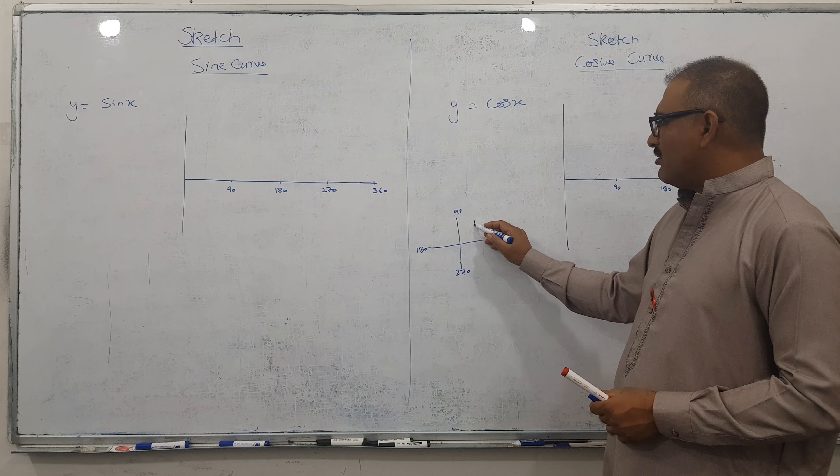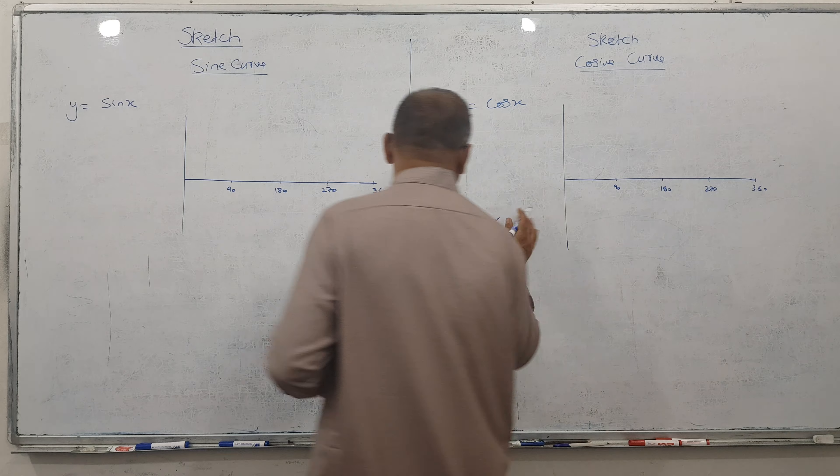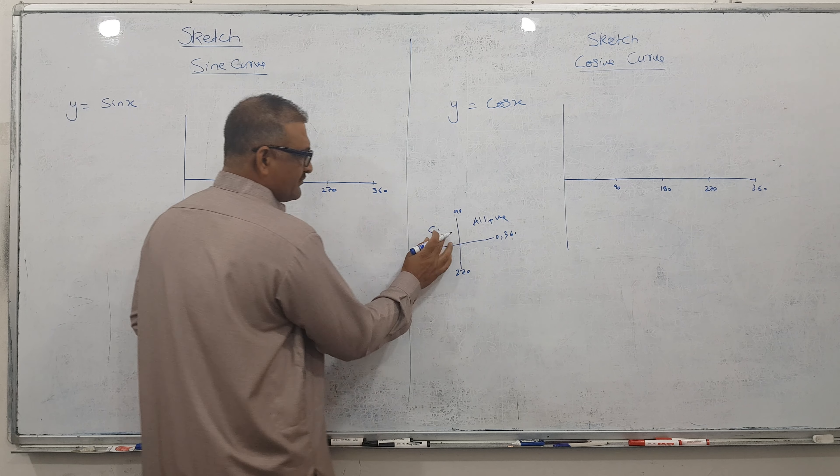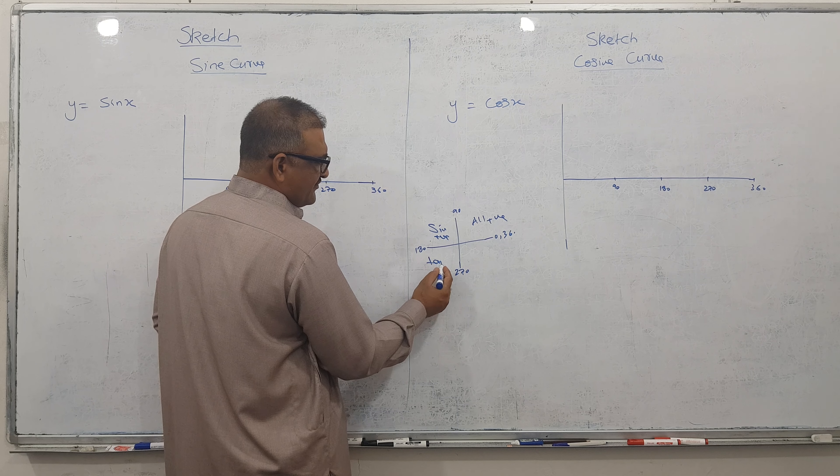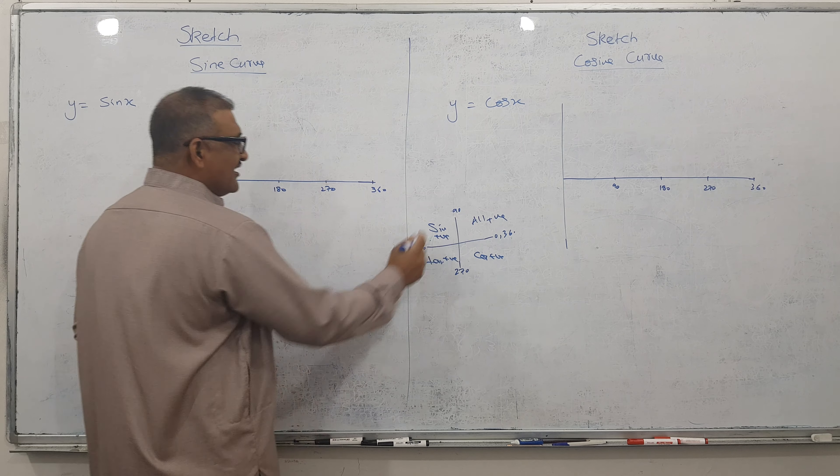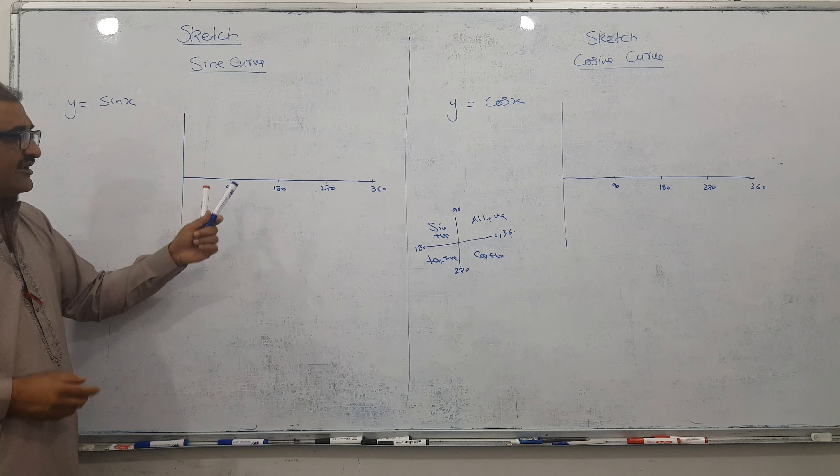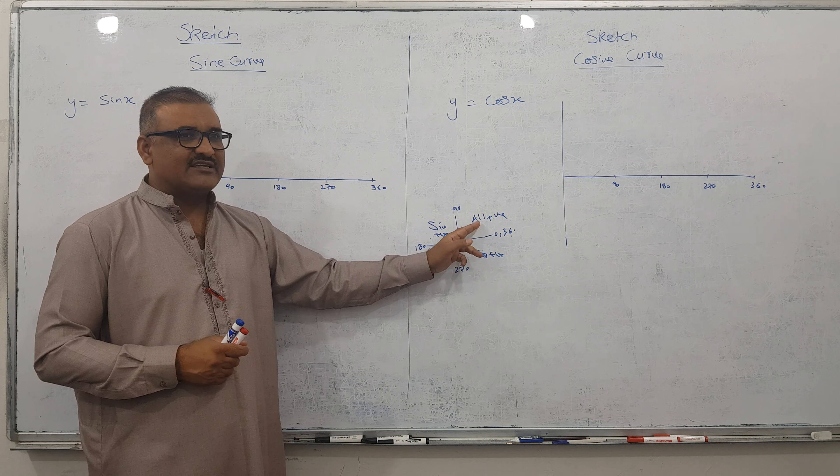You know here all positive. Here only sine positive. Here all positive. Here sine positive. Here tan positive and here cos positive. You see the 90-90 gap. That is the reason I showed 90. And you will see now. Because here all positive means here sine positive.